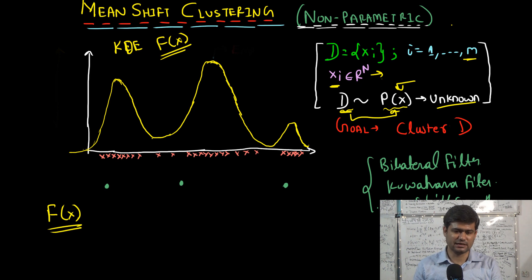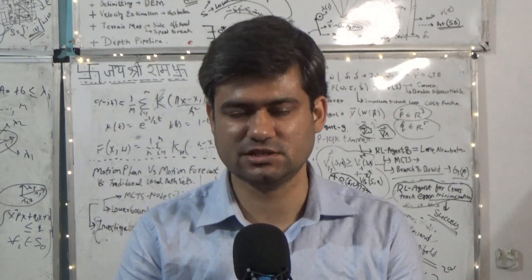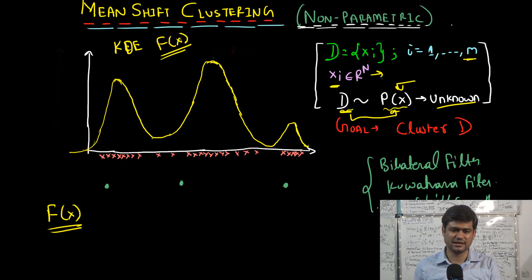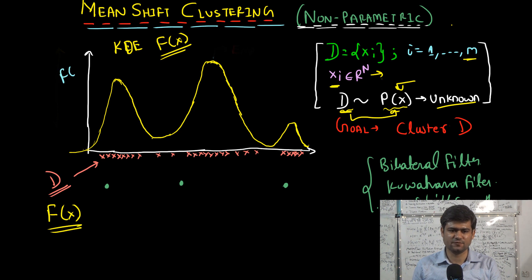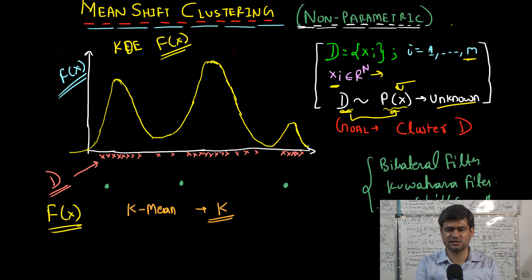We will try to understand how mean shift clustering is different from k-means clustering. Recall that in parametric clustering algorithms like k-means, we have our data set D with its points plotted on an axis, and the y-axis shows our kernel density estimator function f(x). In k-means clustering, we begin with specifying the number of clusters k — let's suppose we assume there are three clusters in this data set.